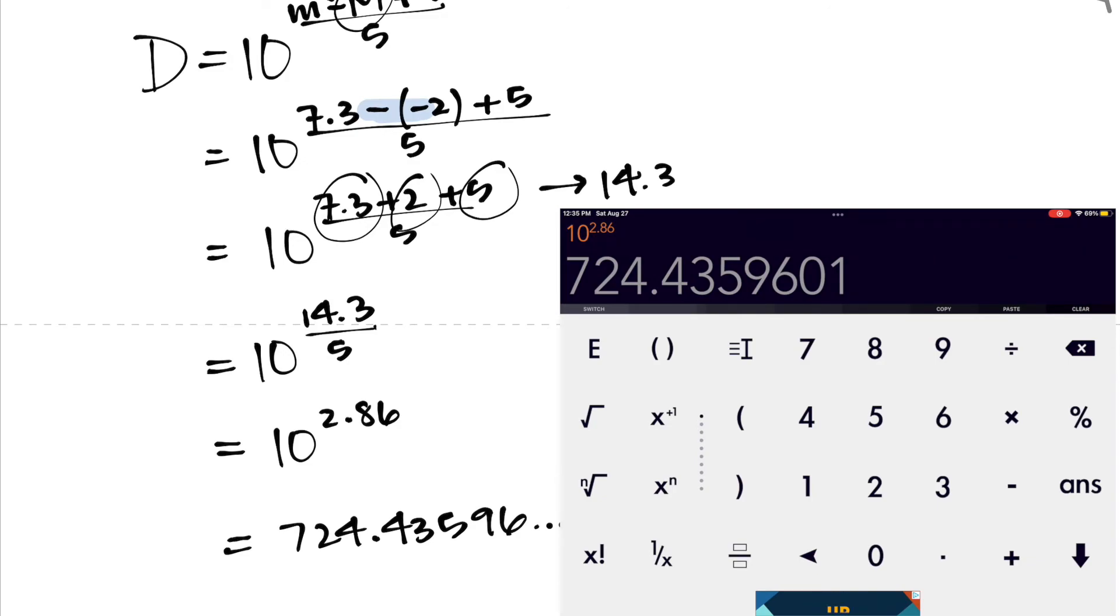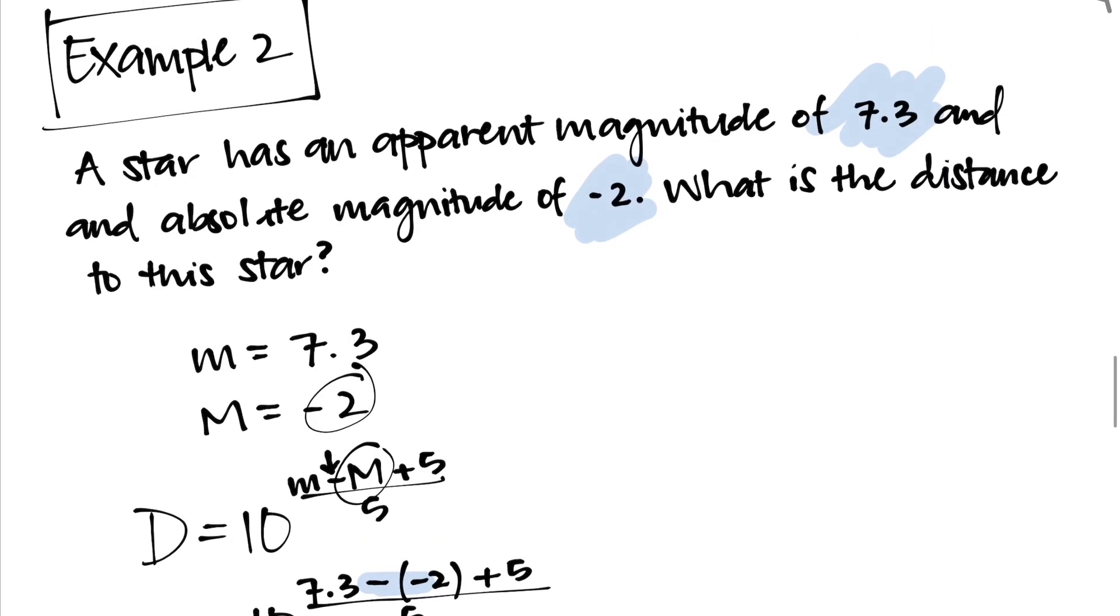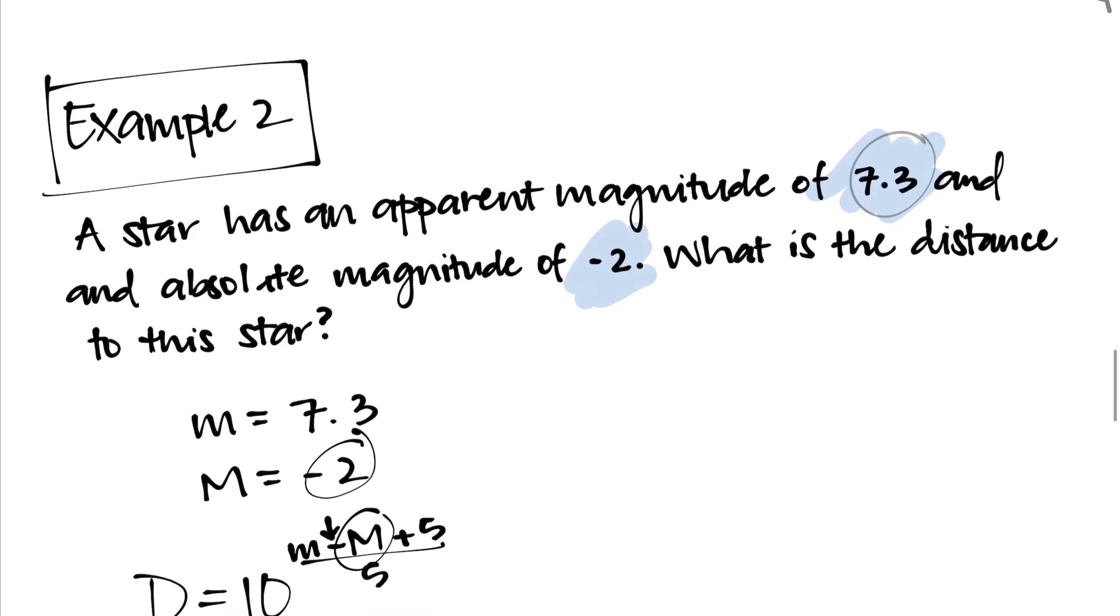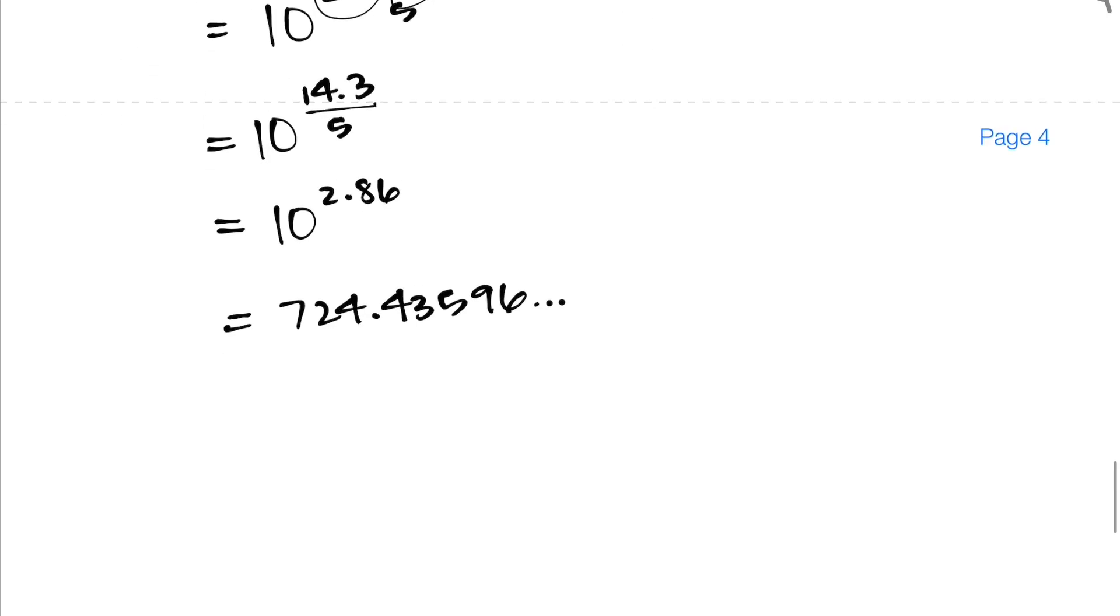in order for us to determine how many significant figures we need in our final answer, we have to go back to the original problem and look at the two numbers we were given. We have 7.3 right here, which has two significant figures, and we have negative 2 right there as the absolute magnitude. And in this case, we only have one significant figure. So in order for us to determine whether we're using one or two significant figures for our final answer, we have to go with the least amount of significant figures given in the problem, and that is one sig fig.